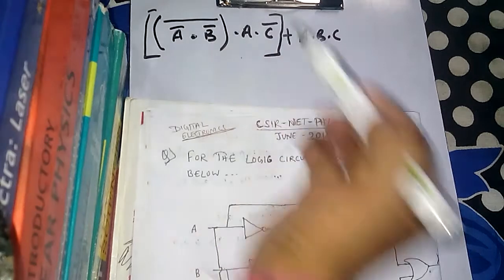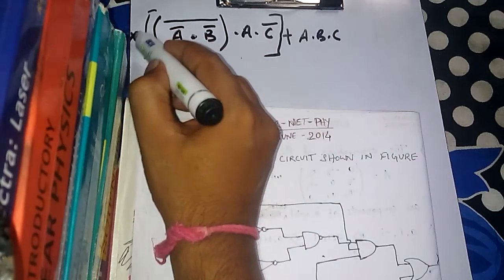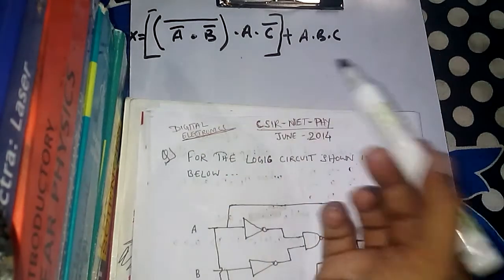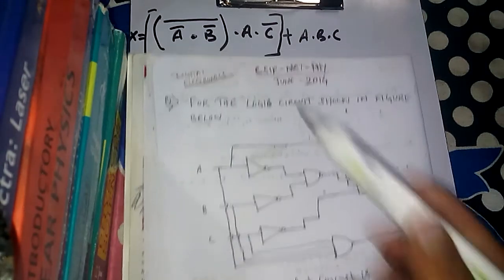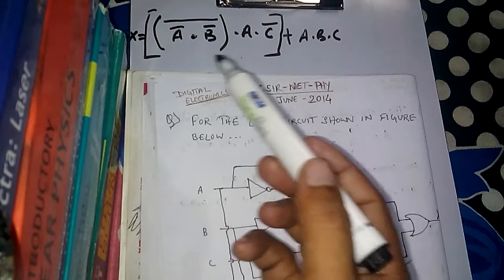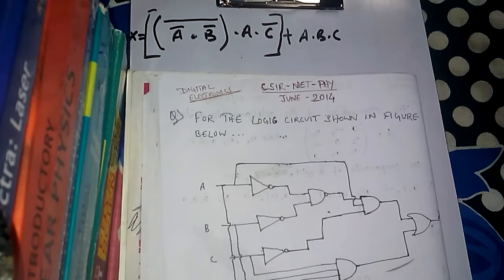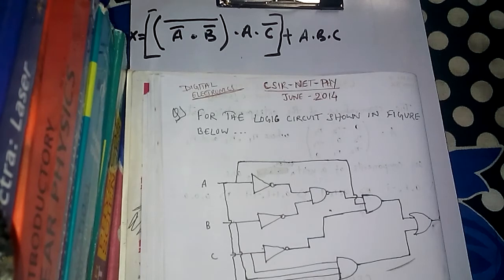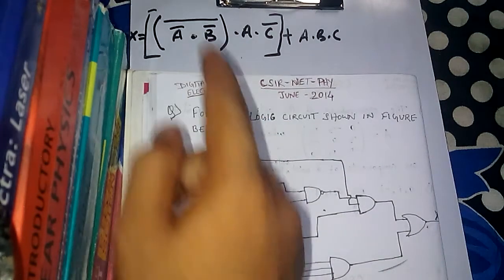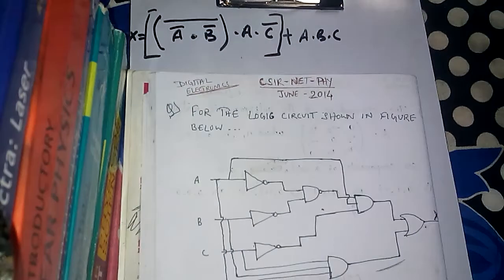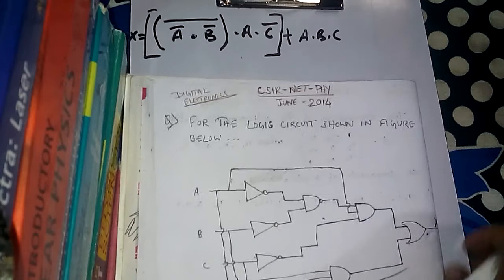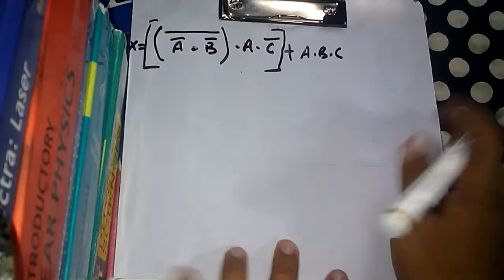This is the Boolean expression equal to X — the full expression for our given circuit. Now we have to simplify it because this is a complex form. We will use the laws of Boolean algebra. The laws we are going to use — first is the Idempotent law.